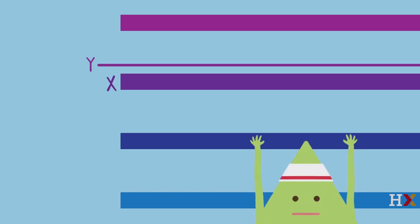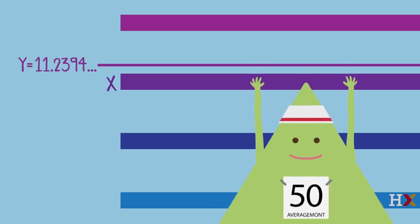For example, just now John reached 11.2394 dot dot dot, and then he grabbed onto bar 11.